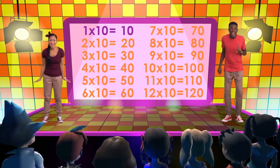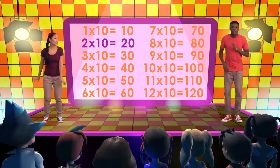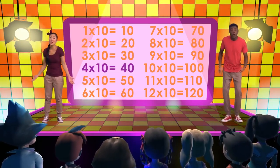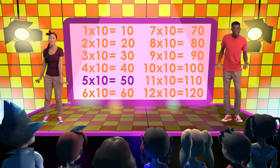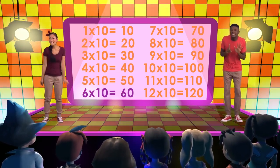One times ten is ten! Two times ten is twenty. Three times ten is thirty. Four times ten is forty. Five times ten is fifty. Six times ten is sixty.